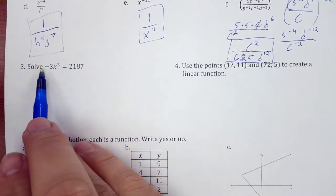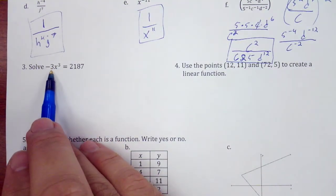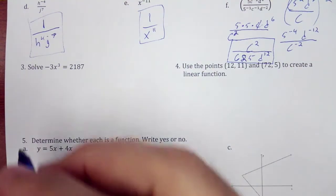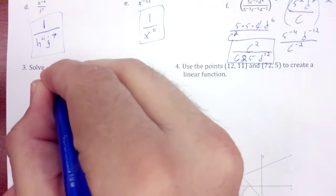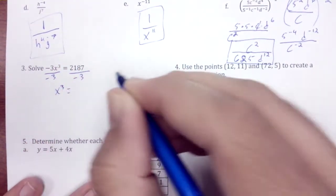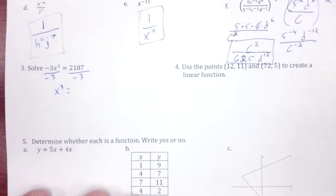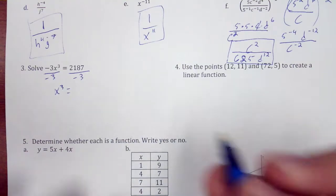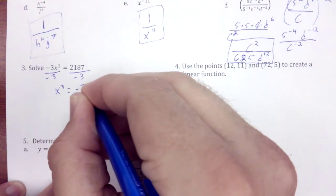Okay, so I'm going to solve negative 3x to the third equals 2187. The first thing I'm going to do is divide by negative 3, so I get x to the third is equal to, so 2187 divided by negative 3 is negative 729.